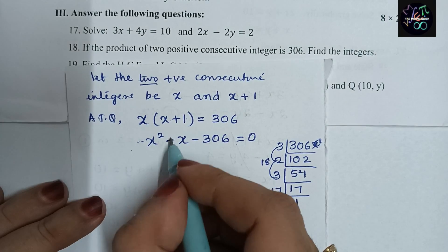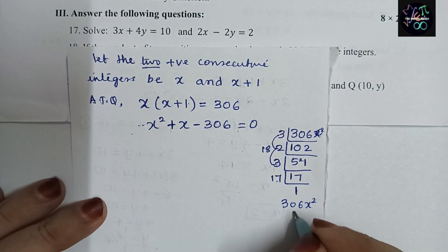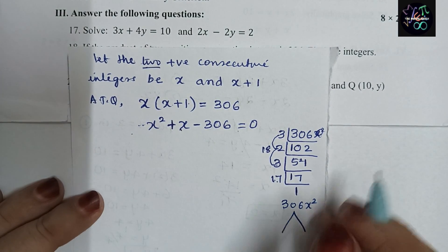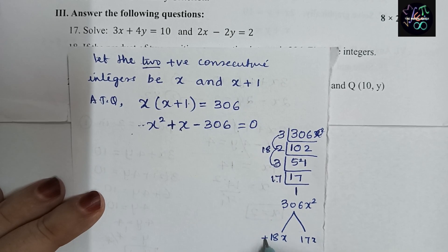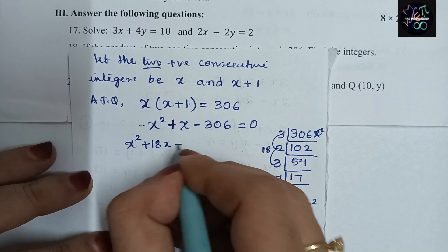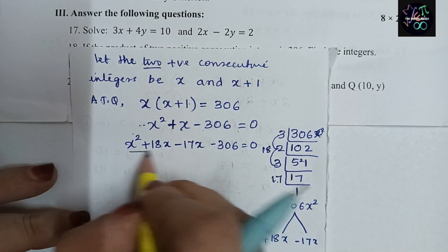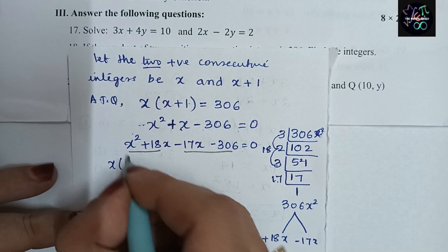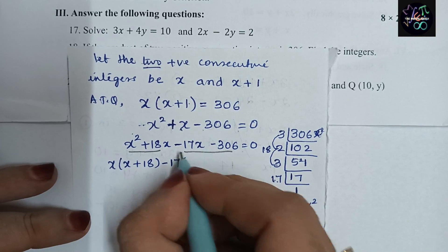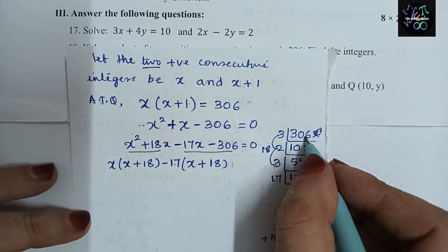So we split the middle term: x² + 18x − 17x − 306 = 0. Now grouping: x(x + 18) − 17(x + 18) = 0. The common bracket is (x + 18), so we get (x + 18)(x − 17) = 0.